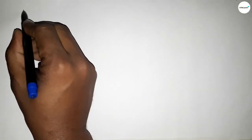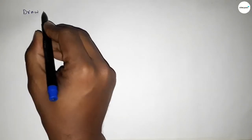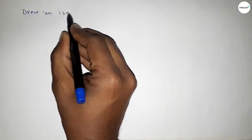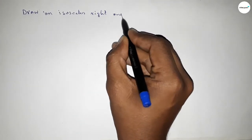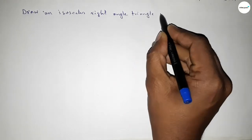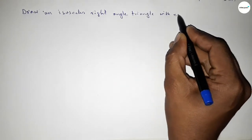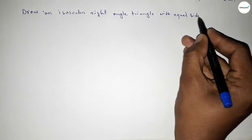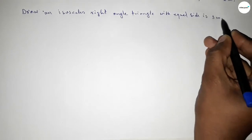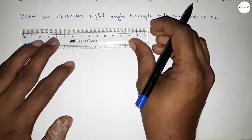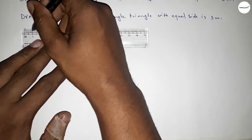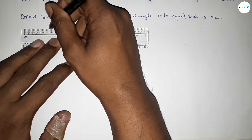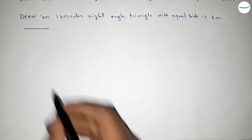Hi everyone, welcome to essay share classes. Today in this video we have to draw an isosceles right angle triangle with two equal sides of three centimeters. Let's start the video. First of all, we have to draw a line of length three centimeters — starting from zero, one, two, three. So first, drawing here a line of length three centimeters.